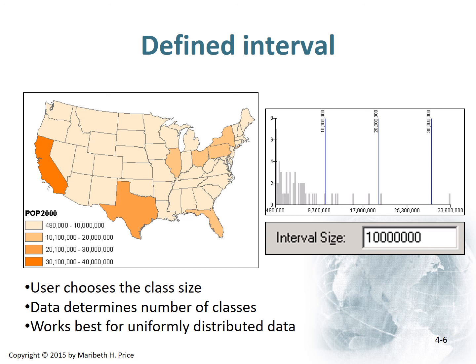Why would you use something like defined interval? If you're looking at income data and you know that tax brackets follow very distinct intervals, you could set an interval size that would cause your data to line up with income tax information.